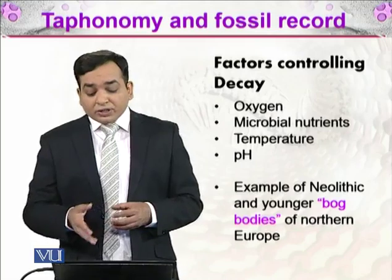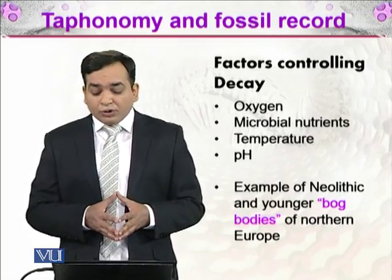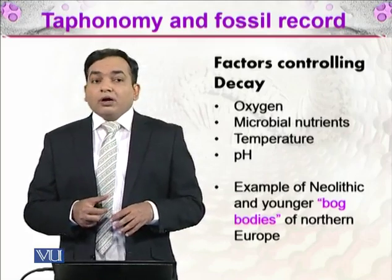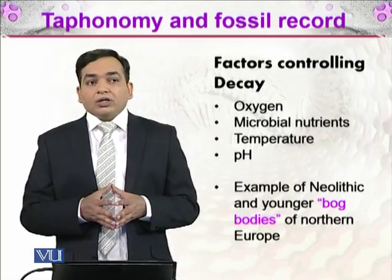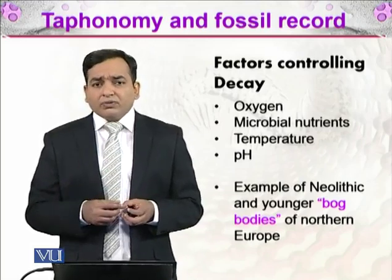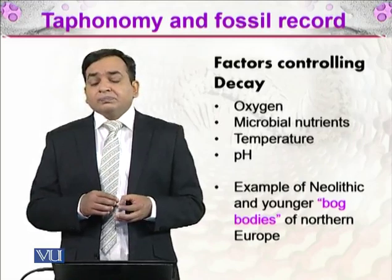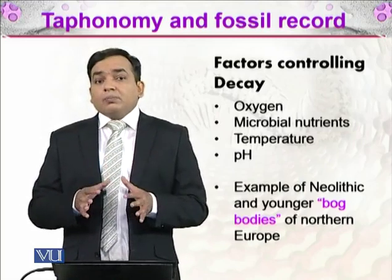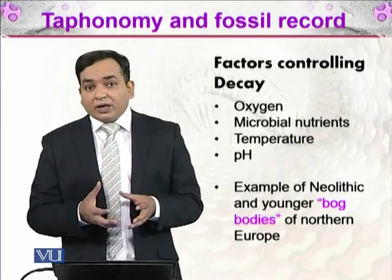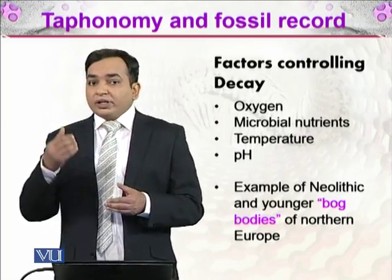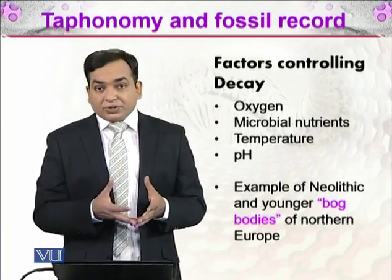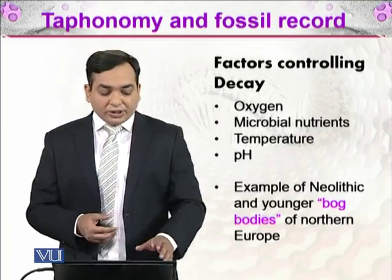In the case of pH, we have the example of Neolithic and younger bog bodies of Northern Europe. In Northern Europe, there are bog bodies found in peat bogs. The pH in these bogs is very, very acidic, and due to this, everything that goes into them is excellently preserved. These are called bog bodies.